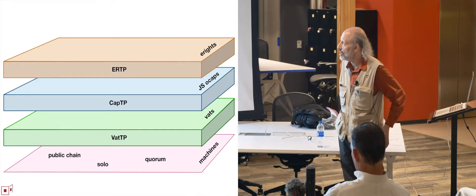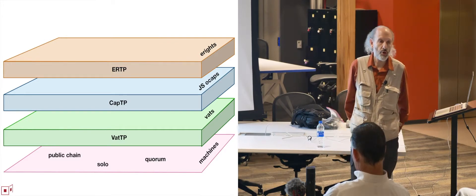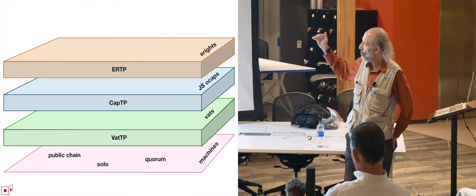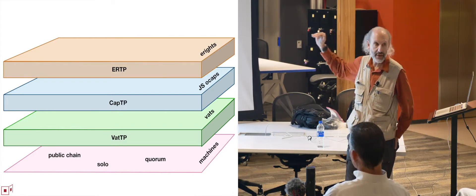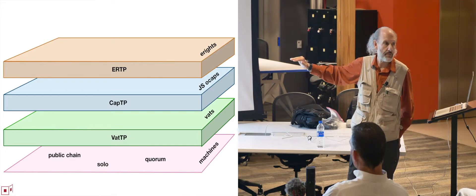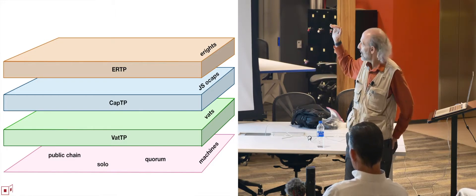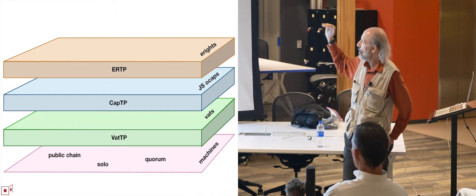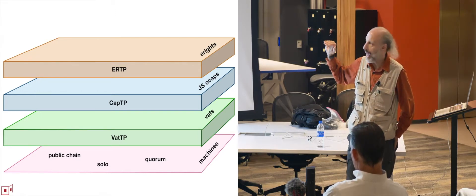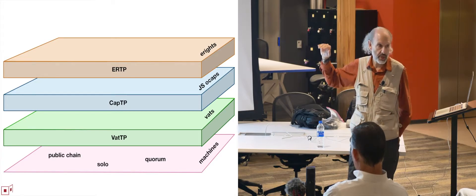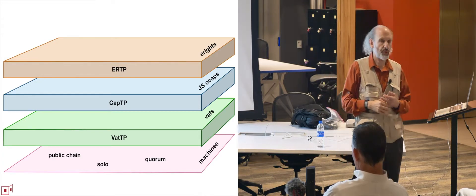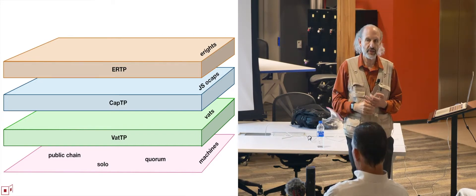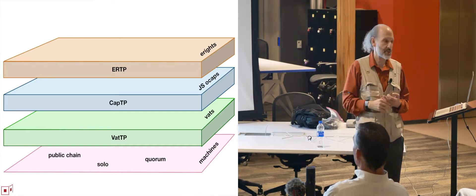Our system comes in three protocol layers. VATTP is the protocol that builds the VAT level of abstraction out of the machine level of abstraction. CAPTP — for capability transport protocol — builds the OCAP level of abstraction out of the VAT level of abstraction. And then e-RTP, the electronic rights transfer protocol, builds the rights and contracting level of abstraction out of the object level of abstraction.